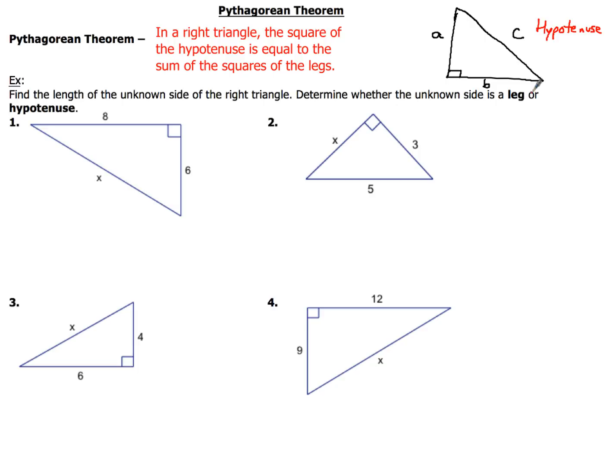Now, the other two sides, A and B, both of those are legs. This is a leg over here, and then so is this piece. So both of those sides are legs. And then the side that's across from the right angle, from the 90 degree angle, that is always called your hypotenuse.